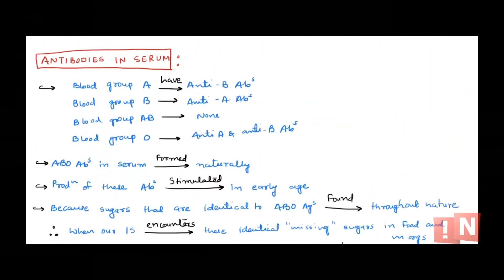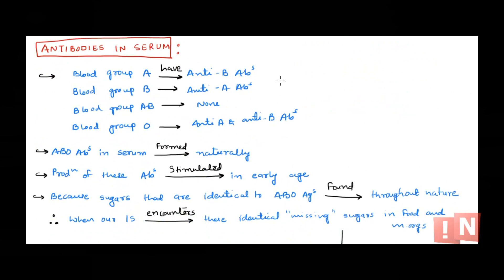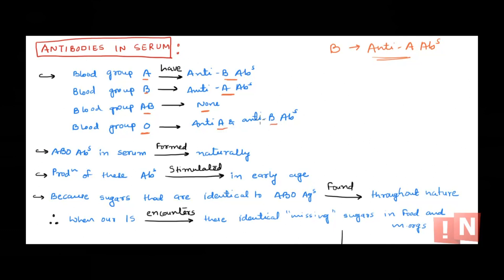One interesting fact: whatever blood group we are, we already have antibodies against the other blood group in our serum. If I am blood group B positive, I already have anti-A antibodies. It is interesting to understand how we already have these antibodies if we have never been exposed to blood group A before. Blood group A individuals have anti-B antibodies, blood group B has anti-A antibodies, AB individuals have no antibodies against A or B, and blood group O individuals have antibodies against both A and B.